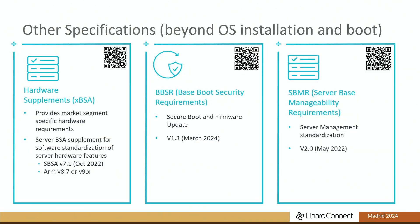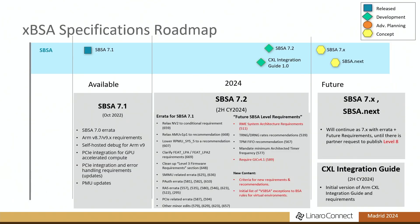Once you have the foundation and you're building a server system, the SBSA supplement gives you the ability to provide software standardization for additional hardware features. That's what SBSA does. It's not necessarily limited to the server space — for example, if we develop a PC standard, there would be a PC BSA supplement. Automotive or embedded spaces could have additional specs as well. BBSR covers secure boot, secure firmware update, and TPM. SBMR addresses the BMC — any time you talk to hyperscalers or server vendors, the first thing they ask is how to manage these systems with standards for commands and interfaces to the system and peripherals.